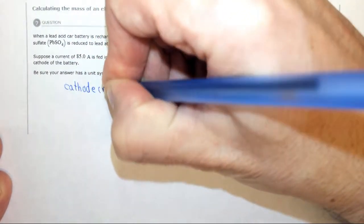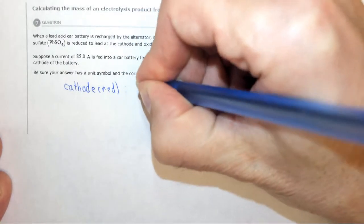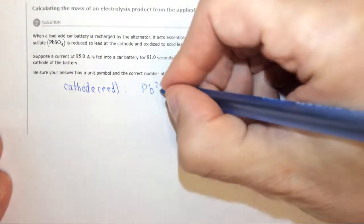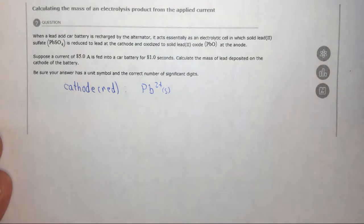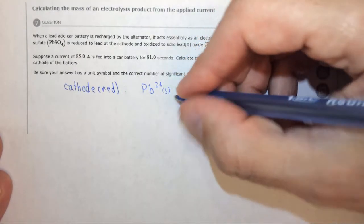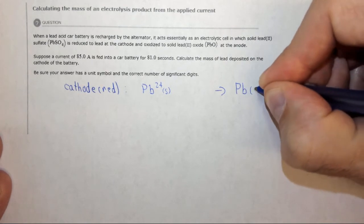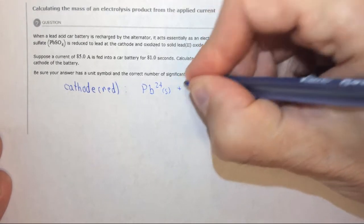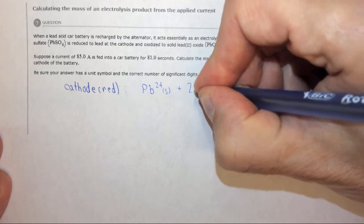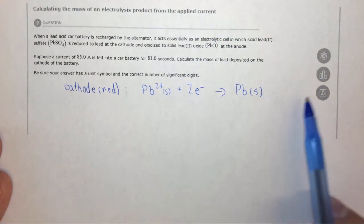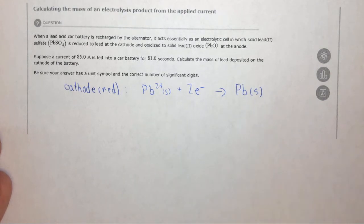So at the cathode we have a reduction occurring. In this case we have lead 2 plus, which is in this case a solid, and it's forming into lead metal. And to have that happen we have to add two electrons. So this is what's happening. Lead 2 plus is becoming lead.